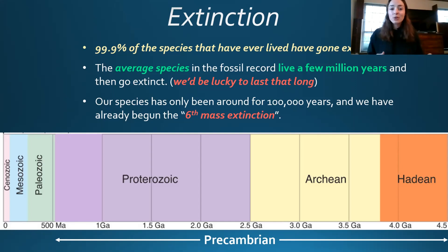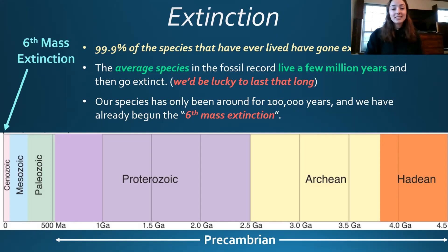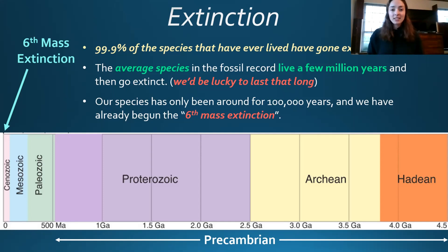The average species in the fossil record lived for about a few million years and then went extinct. But we humans will probably be lucky to last that long. Our species has only been around for about a hundred thousand years now, and we've already begun what people are now calling the sixth mass extinction. This sounds pretty grim, but we're going to be talking about all the other extinction events that have occurred throughout Earth's history — why extinction occurs, how it drives evolution, and a lot of other things about extinction in general.